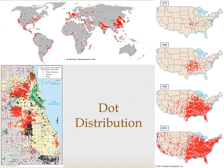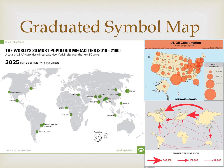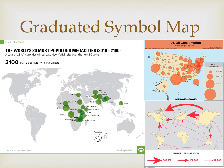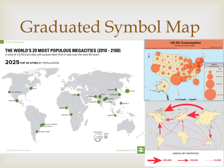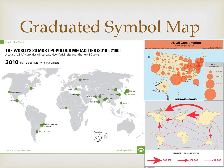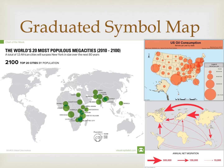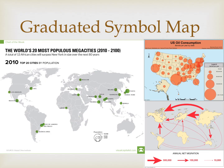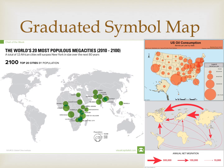Notice that on all three dot distribution maps the dots do not change size. That's important because on graduated or proportional symbol maps, particularly graduated circle maps, the dots do change size. Notice on each of these maps there is a key so we can tell what the different sized symbols mean. Proportional symbol maps are nice because they combine a graph and a map together. The size of the symbol is proportional to the value it represents, which makes it pretty easy to read. We can see location but also change as represented in the proportional size of the symbol. Those symbols are often circles, as you can see on the graduated circle maps of the most populous cities and oil consumption by U.S. state.